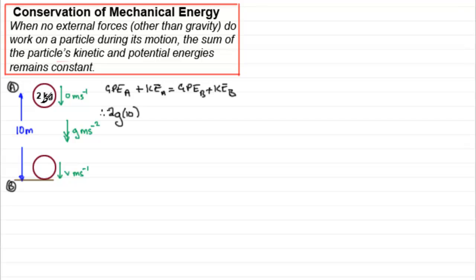Now what kinetic energy does it possess up here? Well, none because it's not moving, it's at rest. So this must be equal to the gravitational potential energy at B, but there is none because we've taken this as the zero level. So there's no height here involved. And then we've got the kinetic energy at B. So that's going to be a half mv squared. So half multiplied by the mass of 2 times v squared, half mv squared.